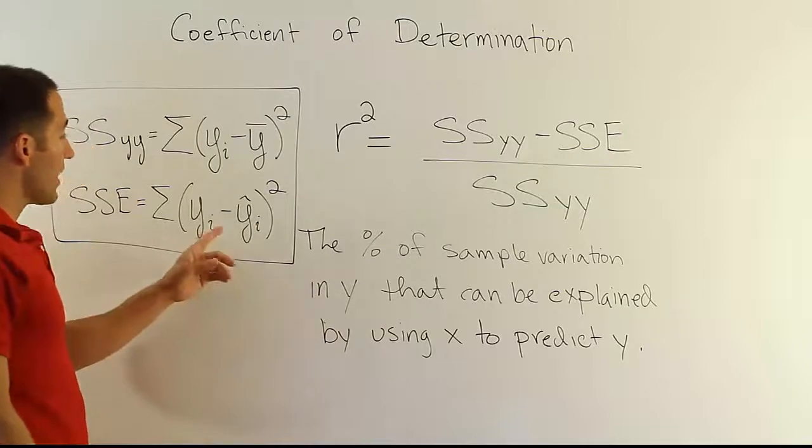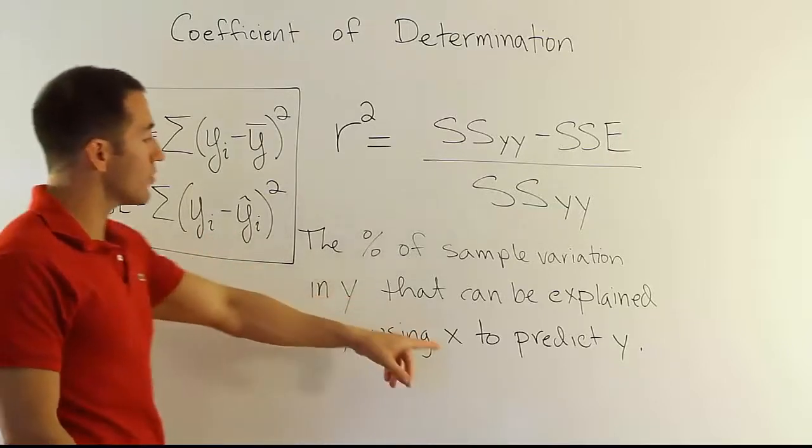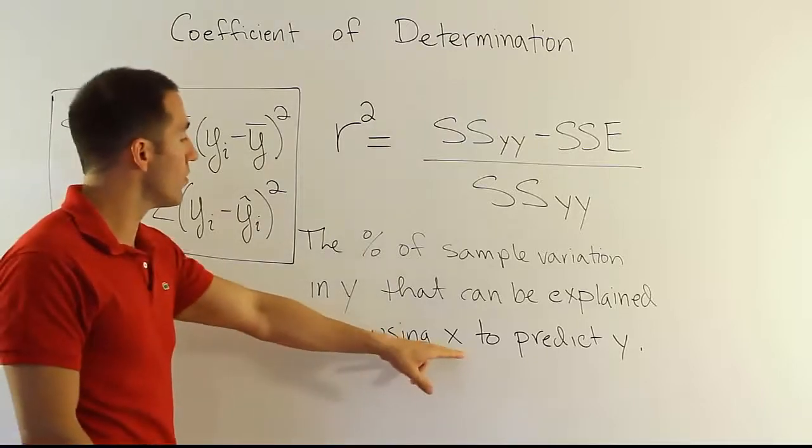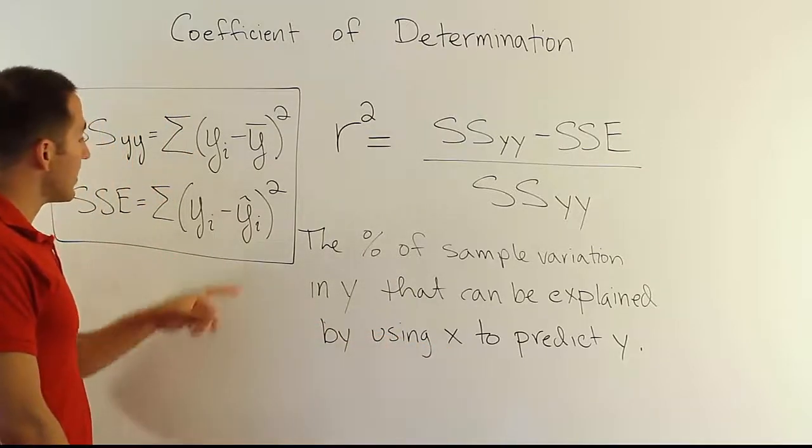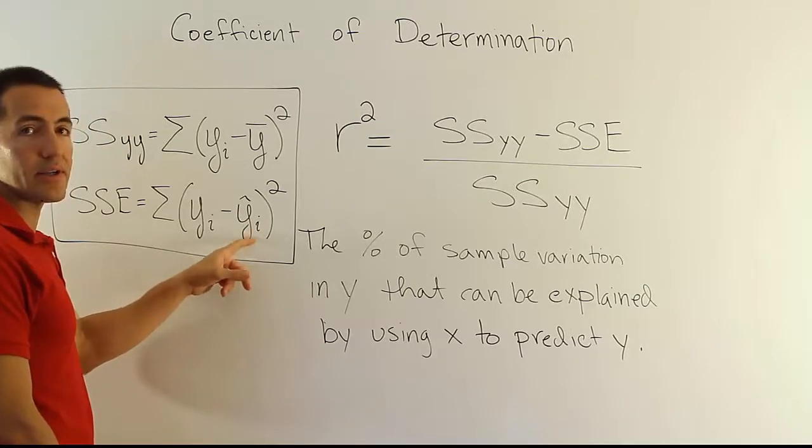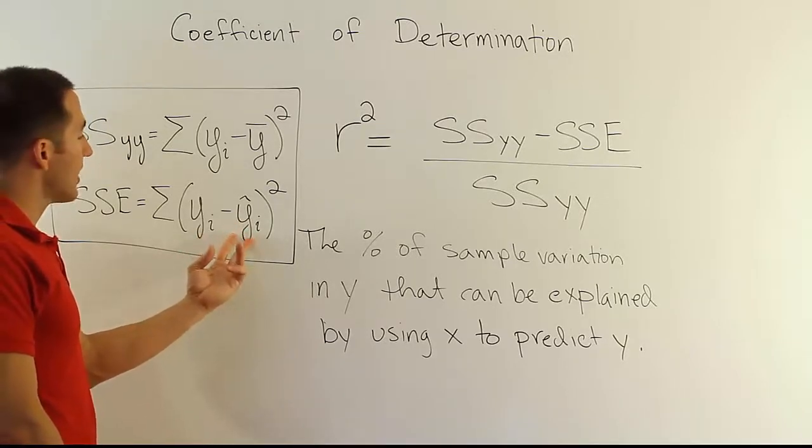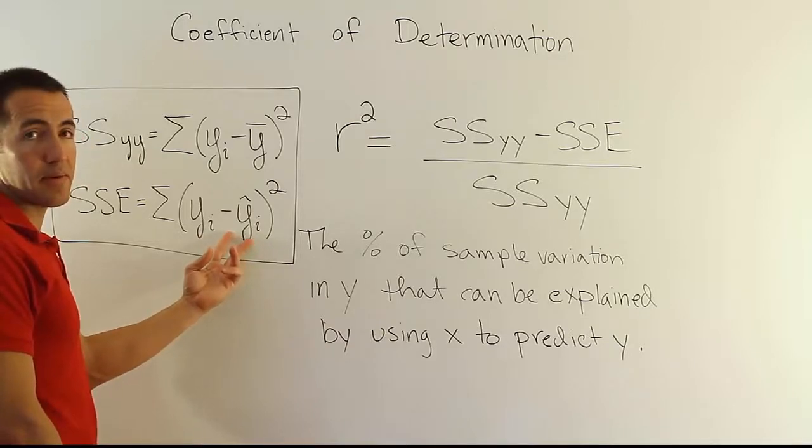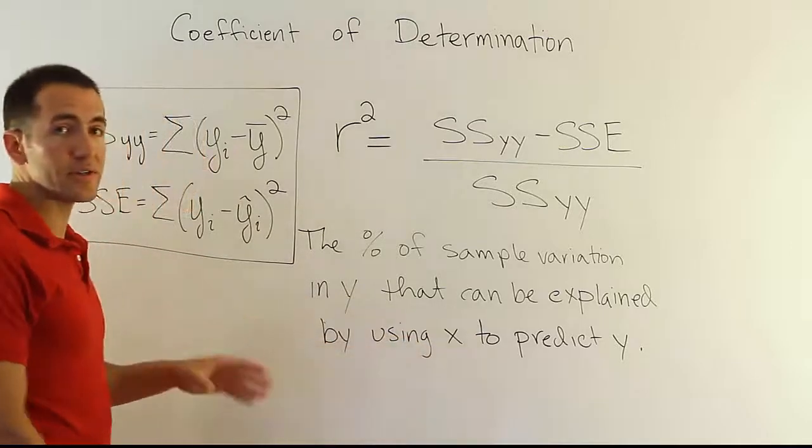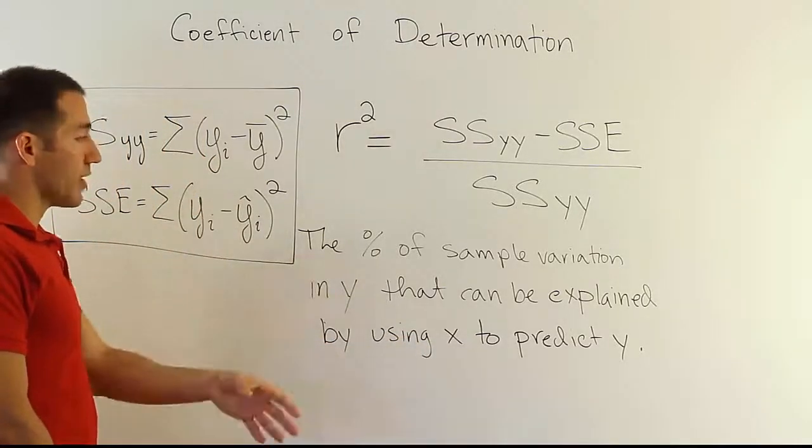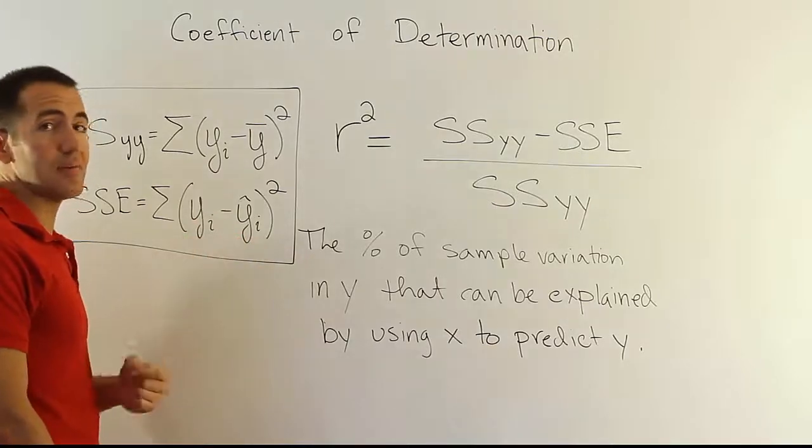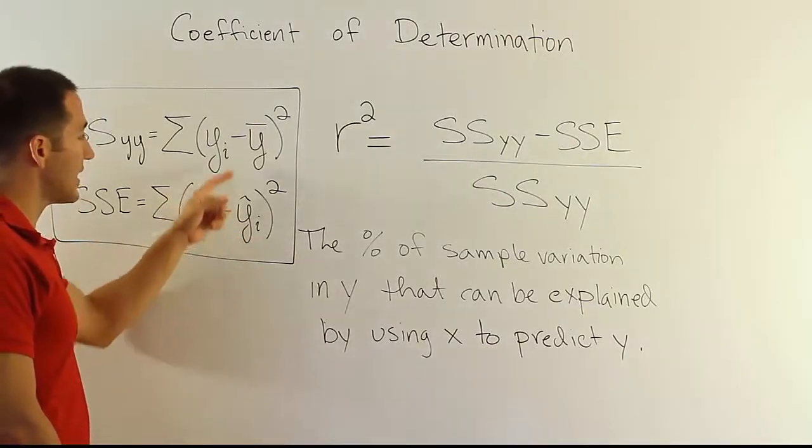Now what happens though if x has no role in predicting y? We spoke about this earlier, and that is that when x has no role in predicting y, it means that the model here breaks down to y bar. It essentially means that the best guess for the best predictor then becomes the sample mean. So if x has no role, that means the slope is essentially zero. So x basically drops out of the model, and you essentially just get y bar here. If that's the case, it means that these two equations would become identical.